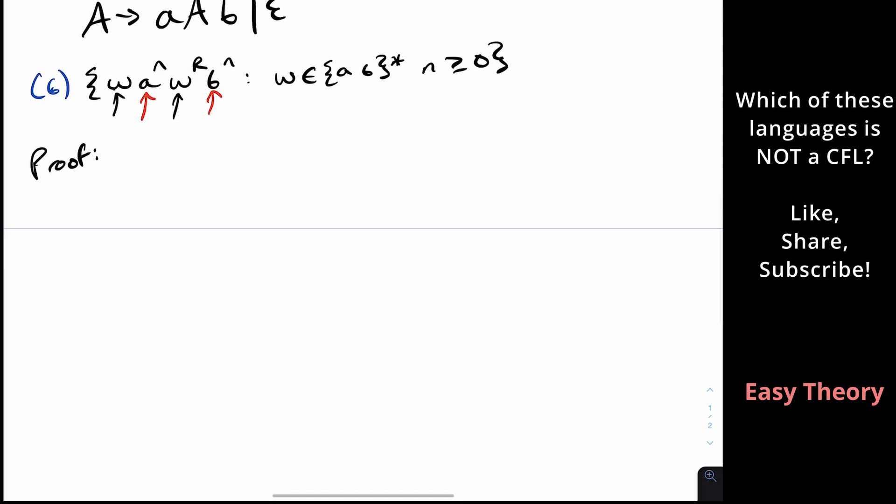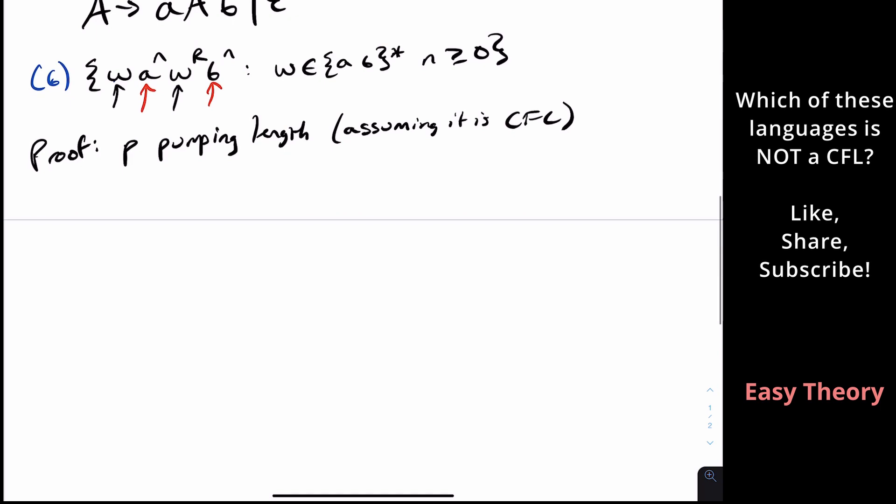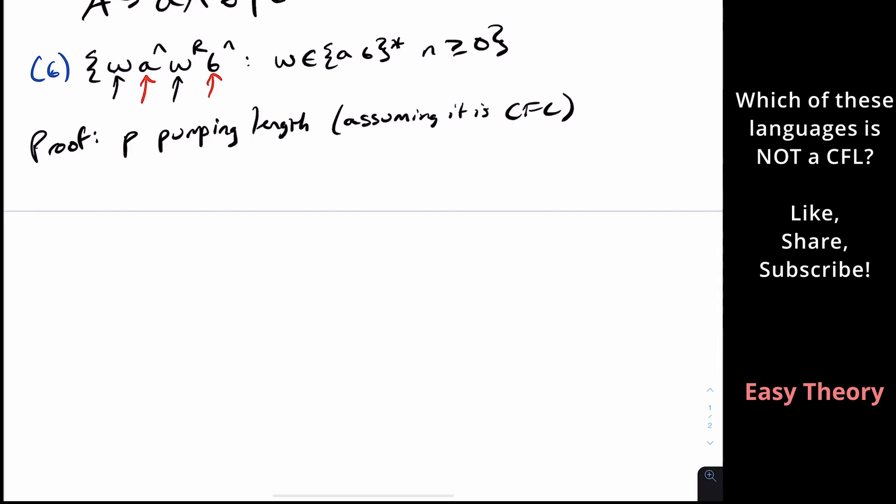So how would we prove this? Well, we would have to use something like the pumping lemma. So how do we prove this? Well, I can't pick a string, let's just say that P is the pumping length for this language, assuming it is context-free. And we'll eventually disprove that, but we're just assuming it's context-free, then there must be a pumping length P for this language. Then let's just say that we wanted to choose the string S. And what I want it to be is B to the P, A to the P, B to the P, B to the P.